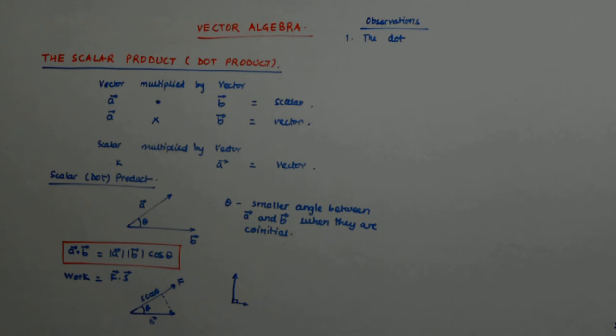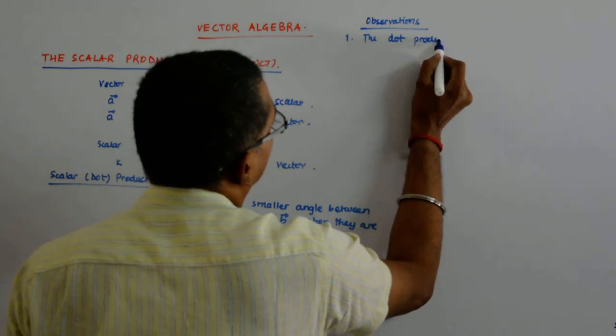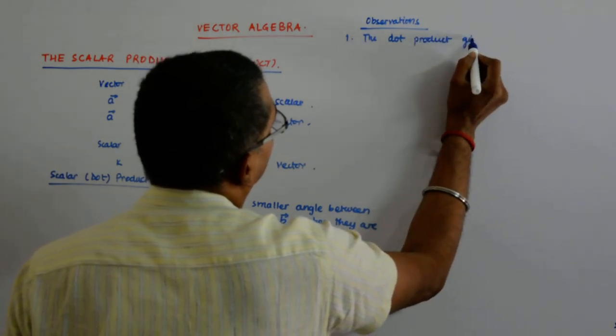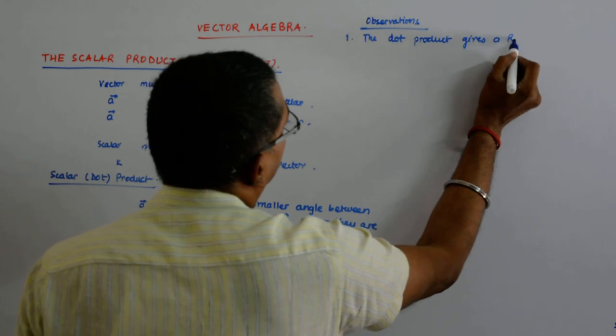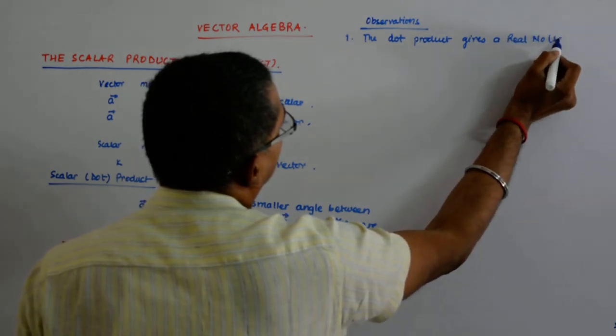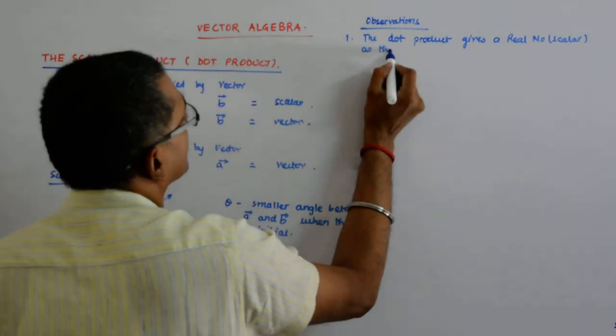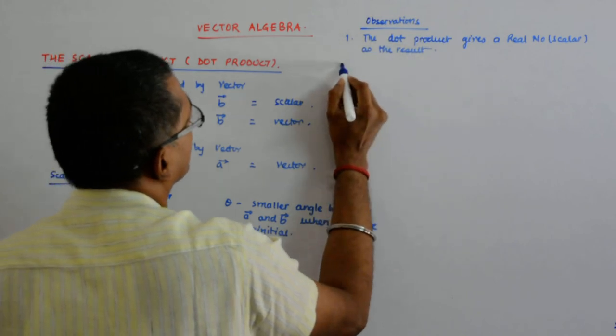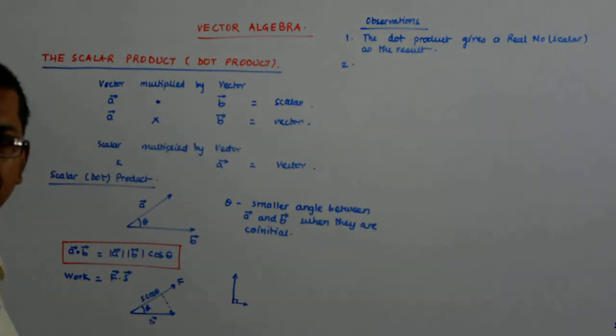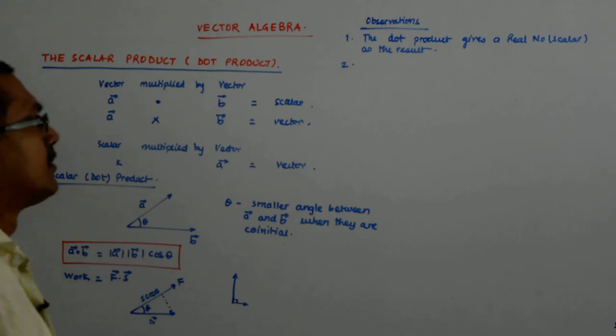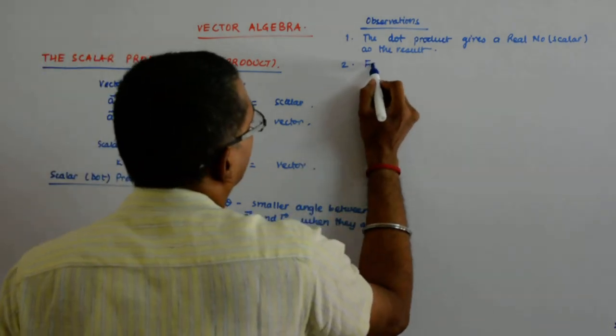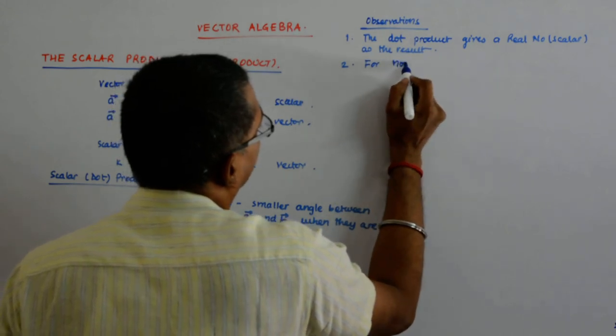This dot will be used. You cannot put a cross. If you put a cross, the whole meaning changes. So, the dot product gives a real number that is a scalar as the result. It gives you scalar as the result. But for two non-zero a and b, for non-zero a and b,